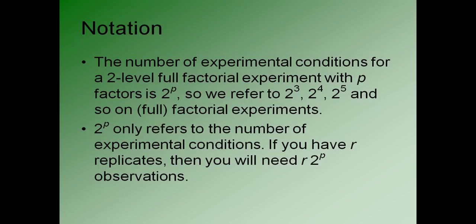So now we need a little bit of notation. When we talk about a two-level full factorial experiment with p factors, we're going to use the notation 2 to the p. So for example, if we have three factors, we're going to use the notation 2 to the 3, four factors 2 to the 4, and so on. So the 2 to the p only refers to the unique number of experimental conditions that you're going to have. For example, if you have two levels and two factors, then there are going to be 2 to the 2 or 4 experimental conditions. If you have r replicates, then you're going to need r times 2 to the p observations. So when we talk about a 2 to the 3 experimental factorial design, we know there are going to be eight unique experimental conditions. But if there are then replicates on top of that, we're going to have as a total number of experimental conditions, the number of replicates times 2 to the 3.